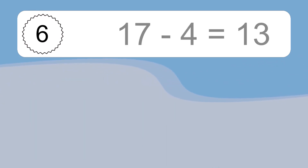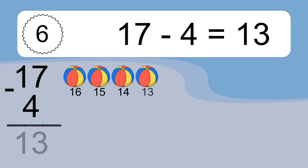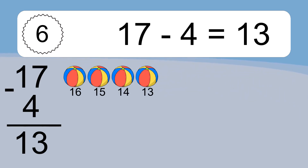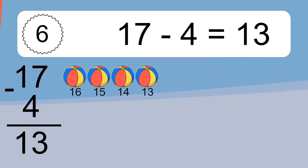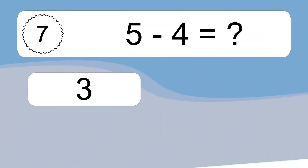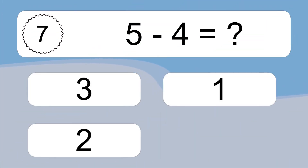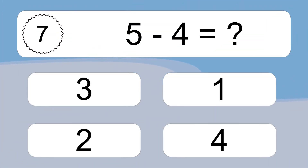17 minus 4 equals what? 17 minus 4 equals 13. Let's count it: 16, 15, 14, 13.